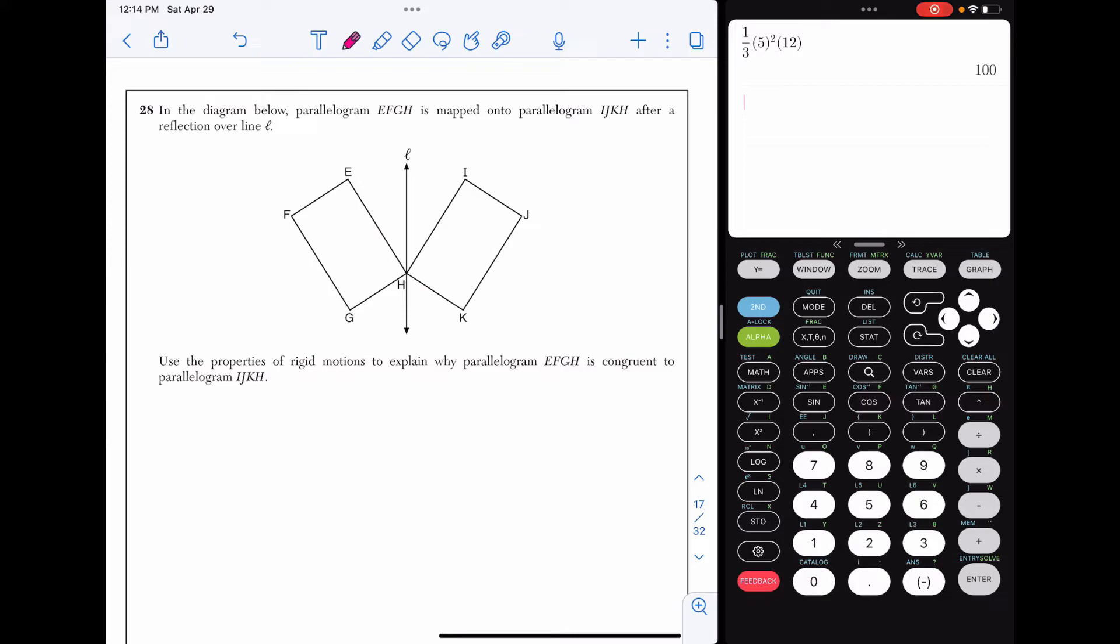Question 28. In the diagram below, parallelogram EFGH is mapped onto parallelogram IJKH after a reflection over line L. Use the properties of rigid motions to explain why parallelogram EFGH is congruent to parallelogram IJKH.